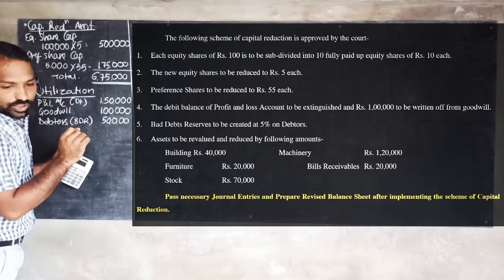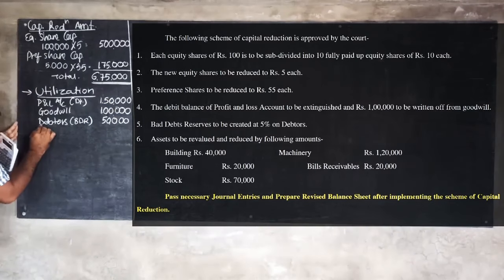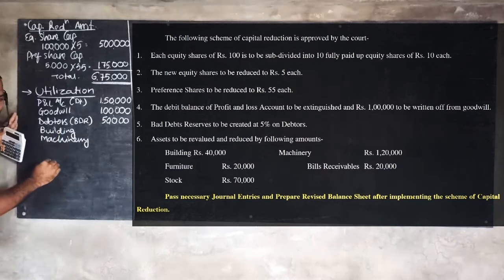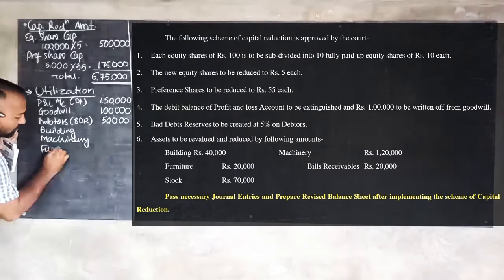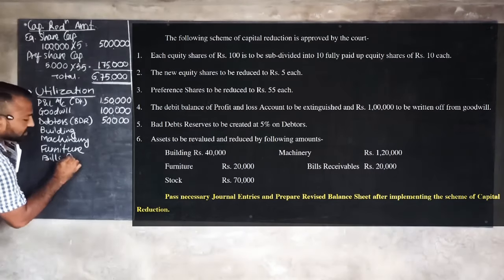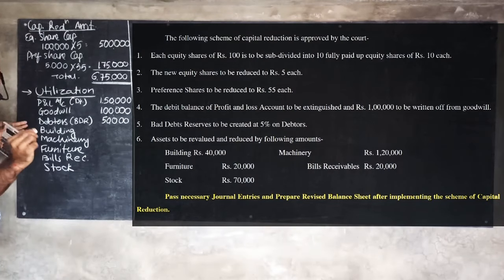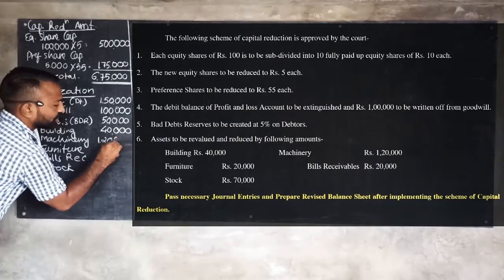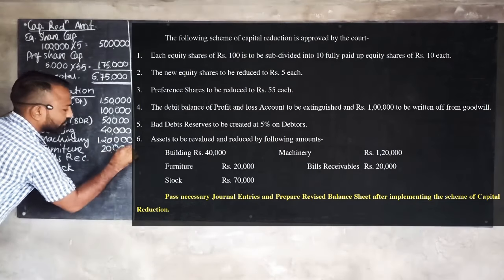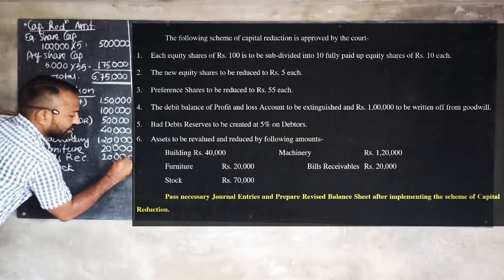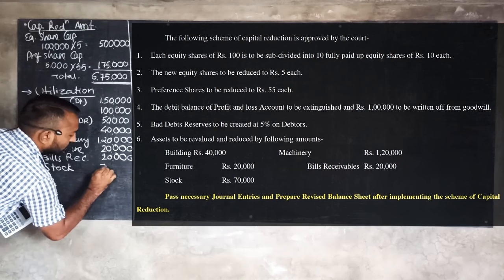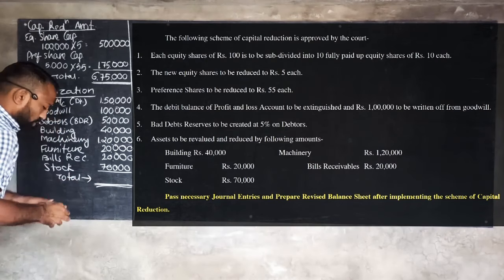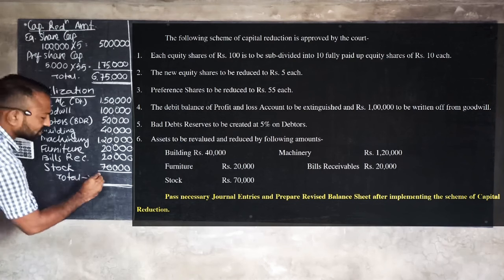Asset reductions are: building rupees 40,000, machinery rupees 1 lakh 20,000, furniture rupees 20,000, bills receivable rupees 20,000, and stock rupees 70,000. So total utilization comes to rupees 5 lakhs 70,000. This completes step 2 — utilization.